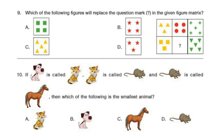Question 10. If dog is called cat, cat is called rat, and rat is called horse, then which of the following is the smallest animal? The correct answer is option C. The smallest animal is rat, and rat is called horse, so option C is the answer.